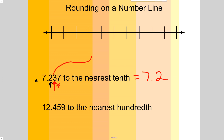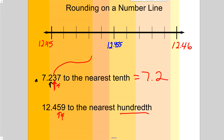Now let's look at another example: twelve and four hundred fifty-nine thousandths, this time to the nearest hundredth. The hundredths place gives us twelve and forty-five hundredths on one end and twelve and forty-six hundredths on the other. I need to figure out where this value fits, and right in the middle would be twelve and four hundred fifty-five thousandths.